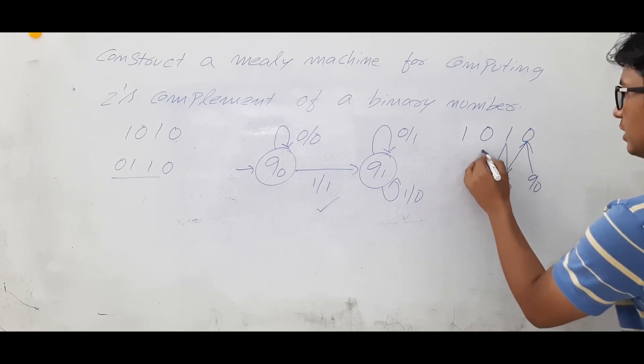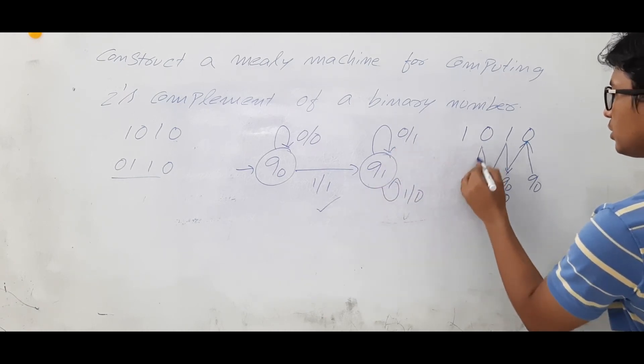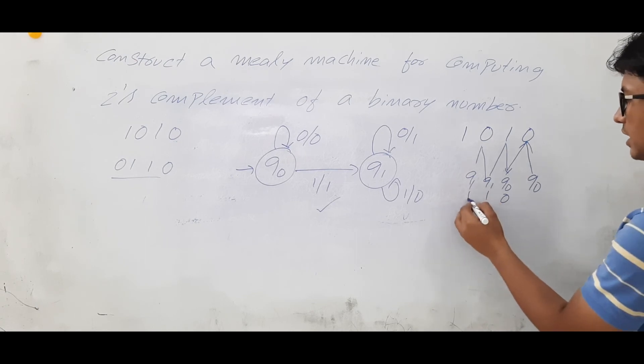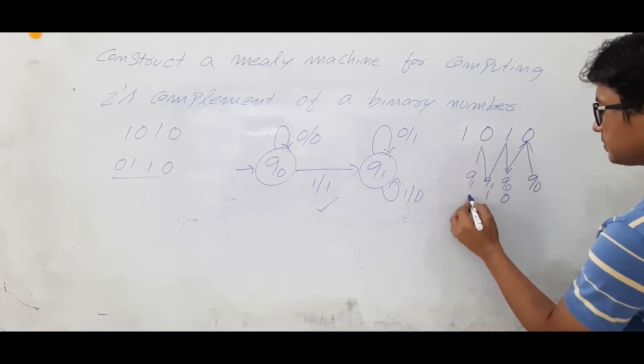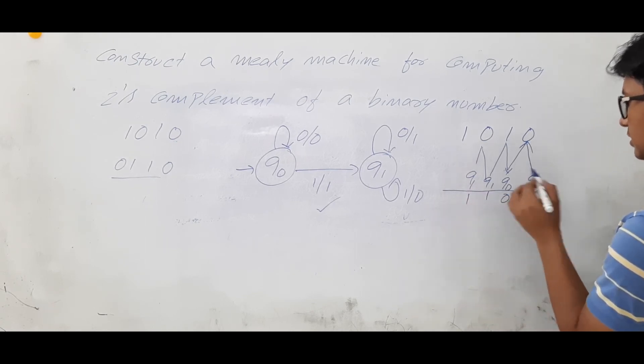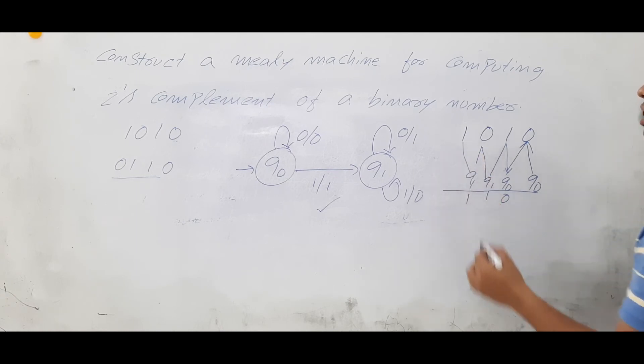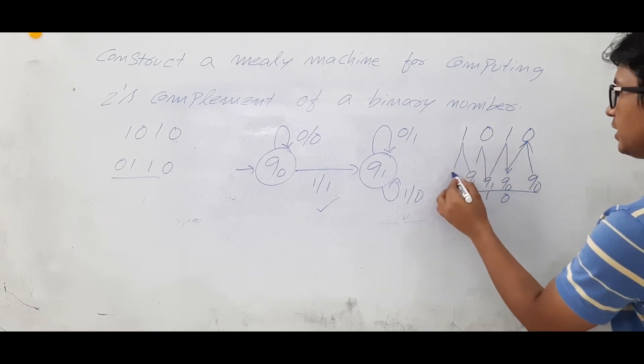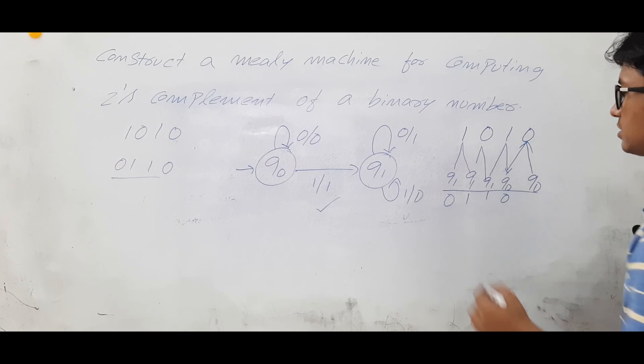Now q1 on 0. q1 on 0, you are going to a state called q1 and you are generating the output as 1. Let me differentiate like this. Now q1 on 1, you are going to q1 and you are getting the output as 0.